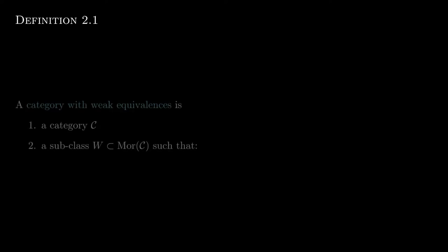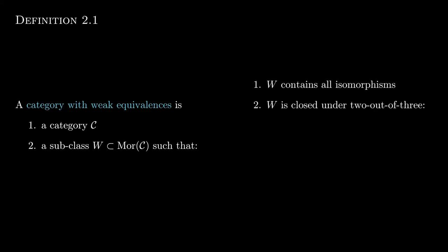So here's a starting point. We want to first generalize this notion of a weak homotopy equivalence. A category with weak equivalences is a category that has a subclass W of its morphisms with the following properties: W contains all the isomorphisms of C, and it is closed under two-out-of-three. This is basically like the transitive equivalence, upgraded. So if any two of the morphisms in that diagram are in W, then so is the third.